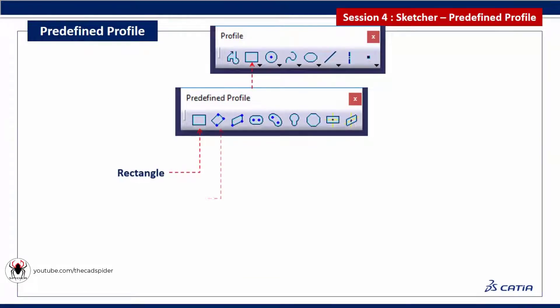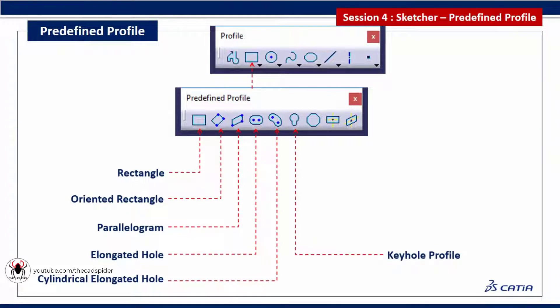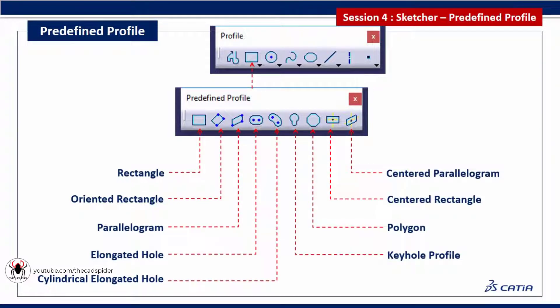The predefined profile tools are: rectangle, oriented rectangle, parallelogram, elongated hole, cylindrical elongated hole, keyhole profile, polygon, centered rectangle, and centered parallelogram.